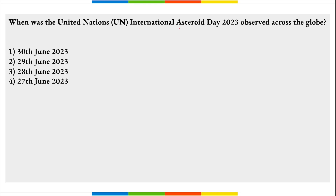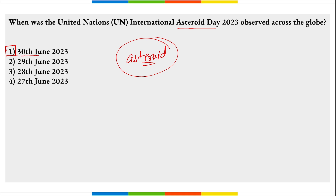First question: when was UN International Asteroid Day observed across the globe? On 30th of June, United Nations International Asteroid Day was observed to raise public awareness about asteroid impact, the hazards it can cause, and crisis communication that can be triggered by near-earth objects — NEO stands for Near Earth Object threat.